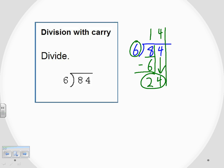And this four times the six out in front gives me another 24. We subtract again, and the 24 minus the 24 gives me zero. So six went into 84 an even number of times because we don't have a remainder.